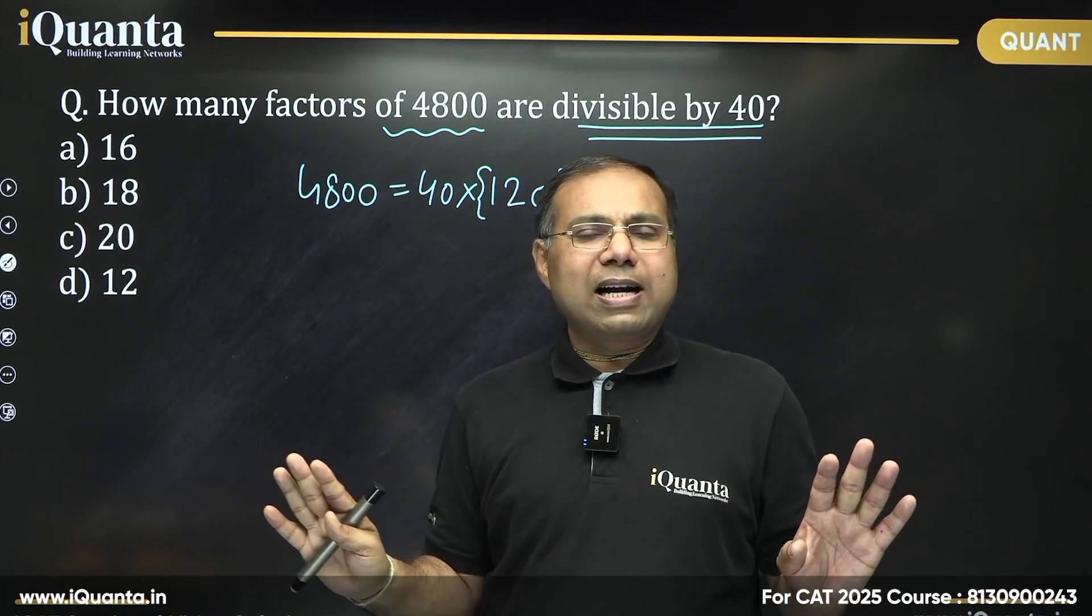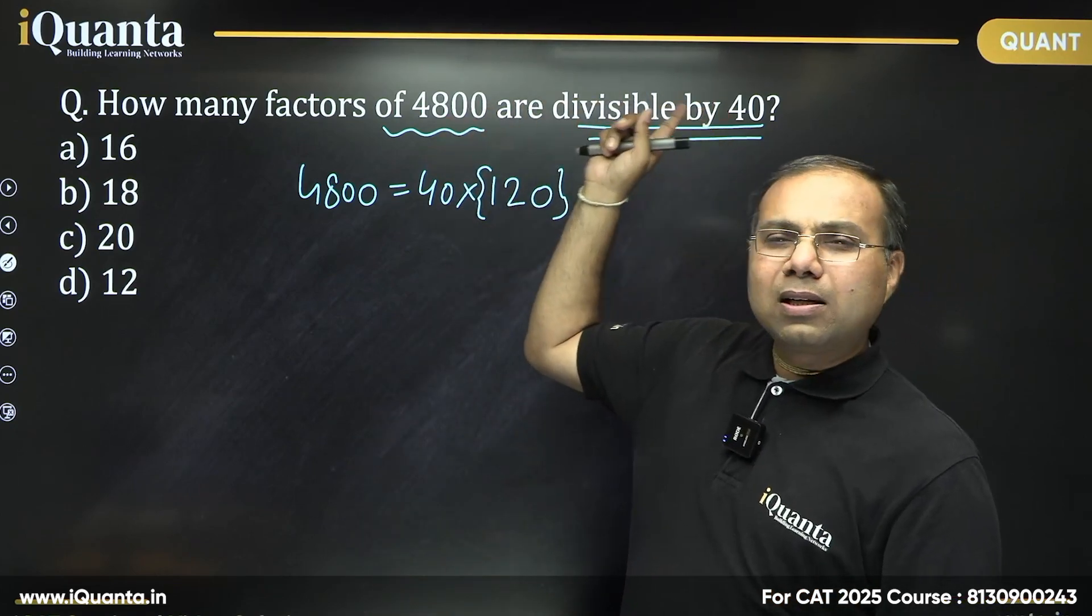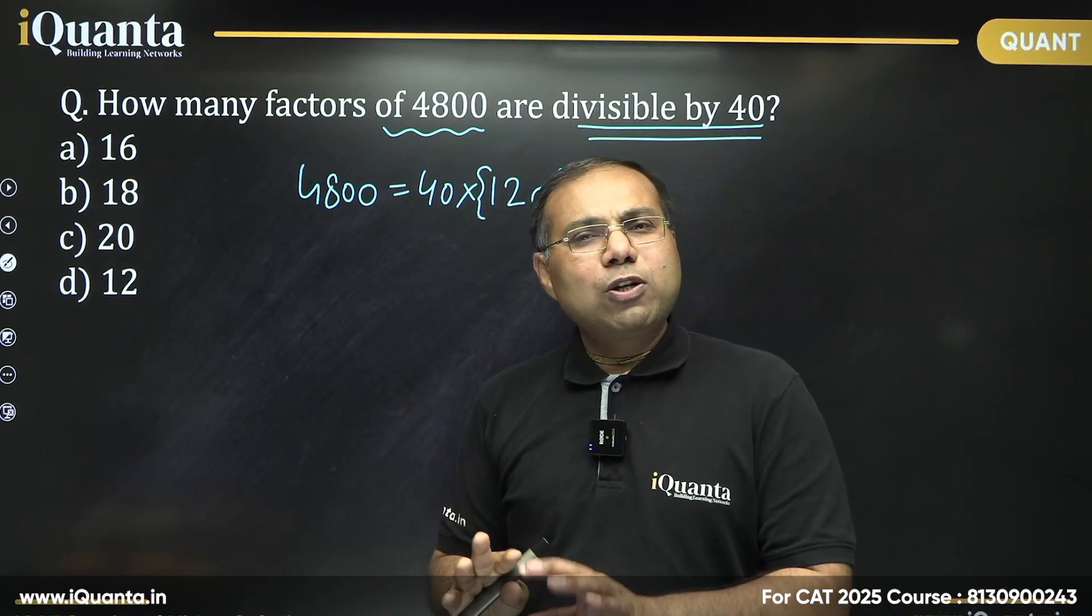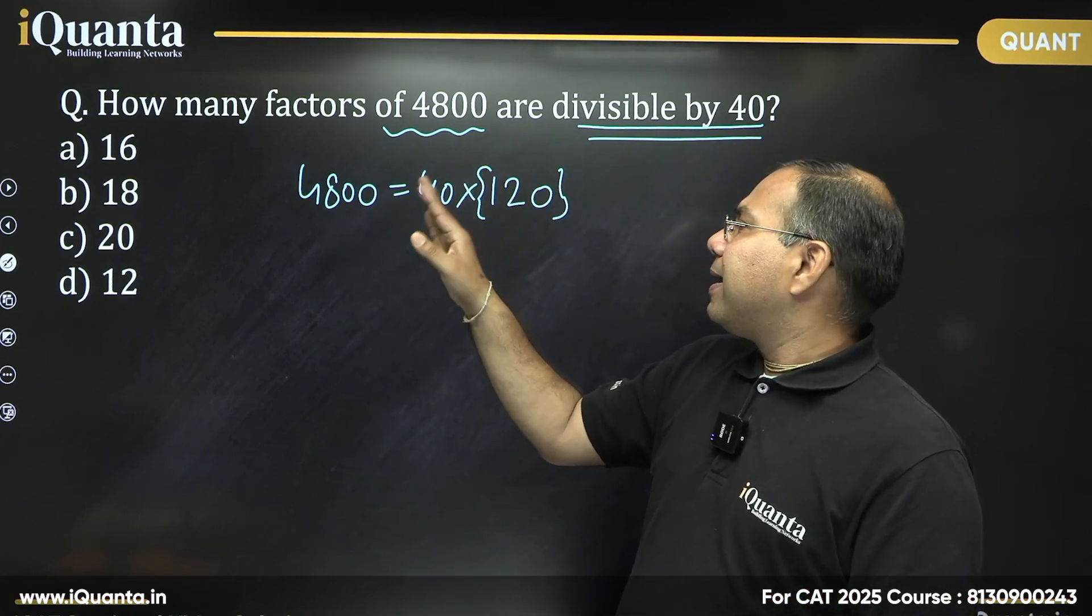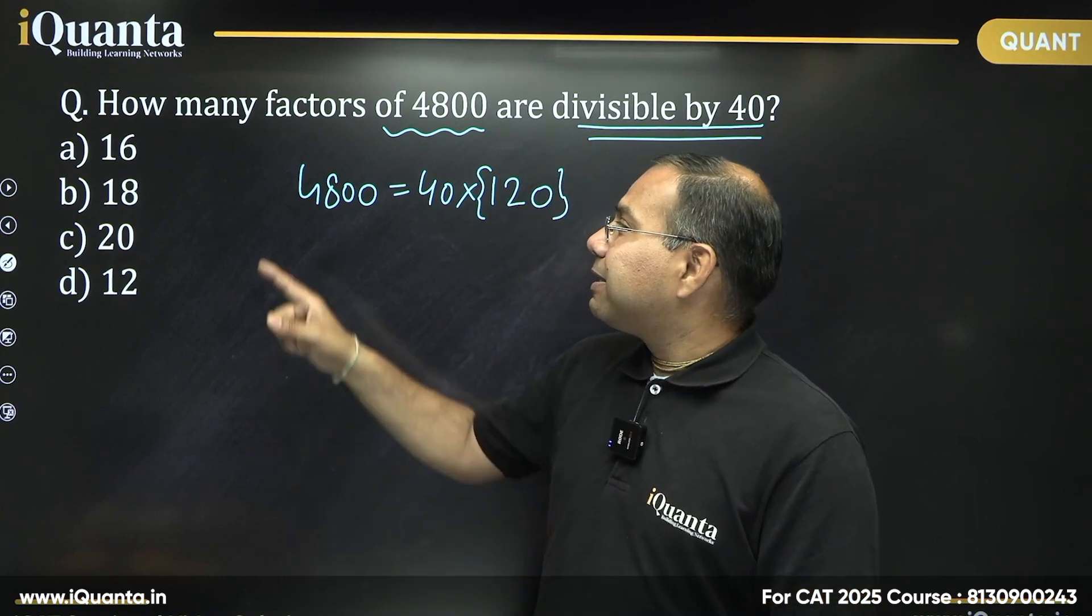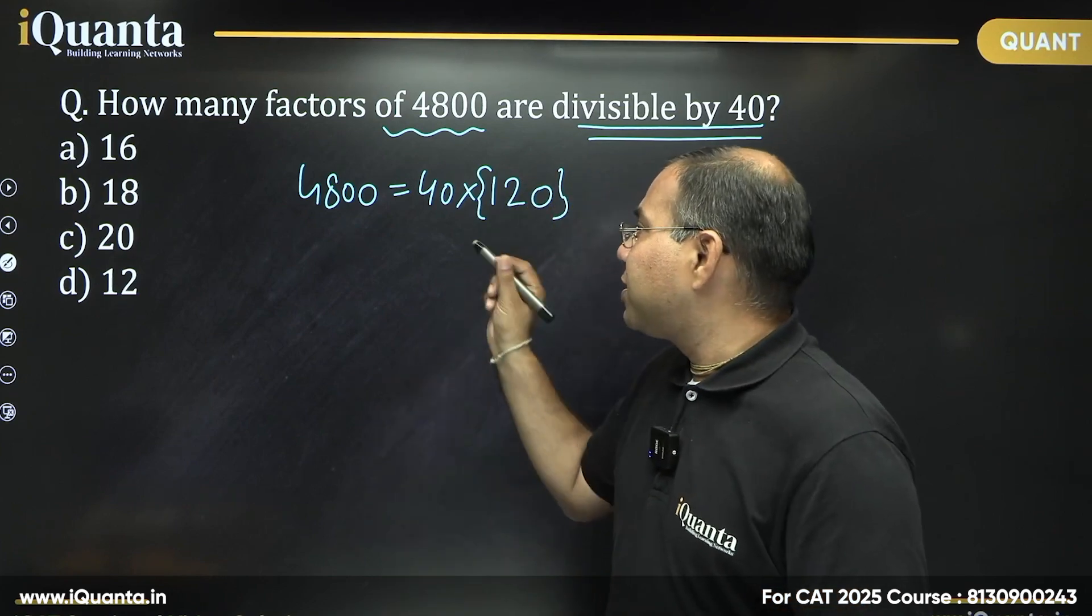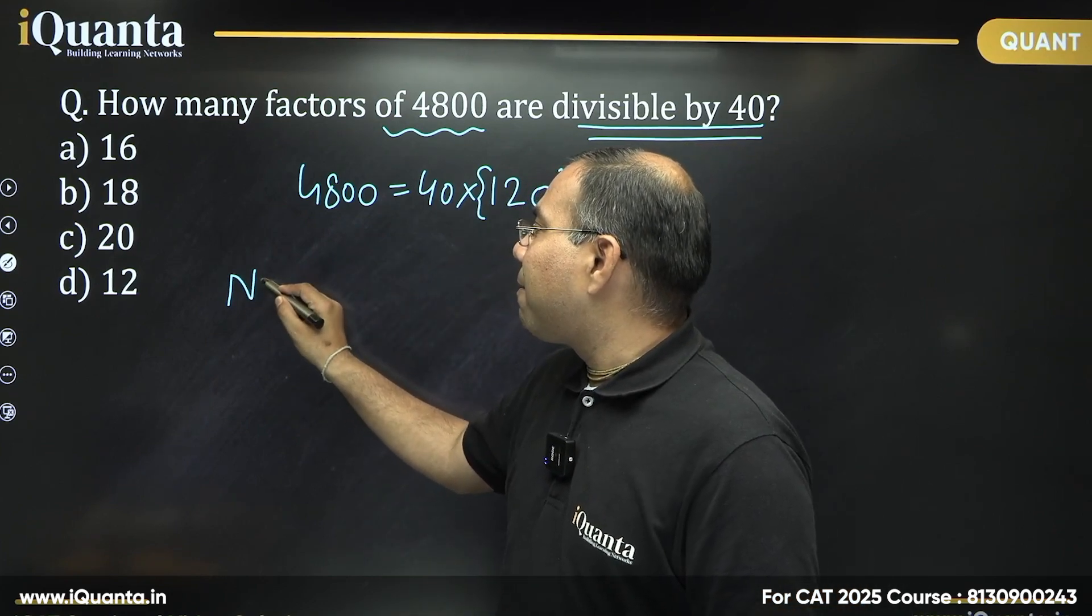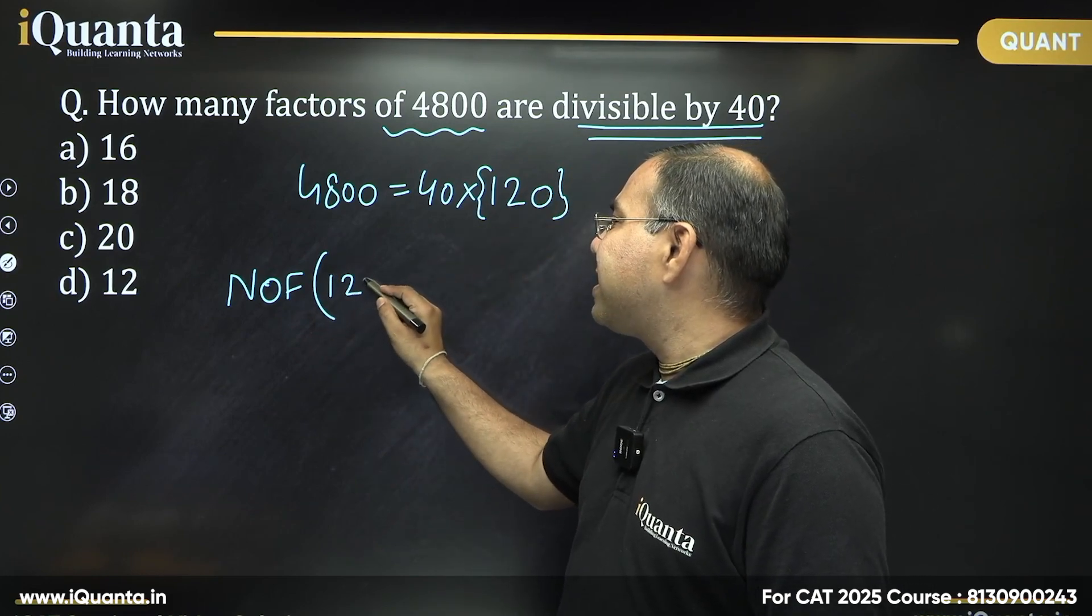Simplest way, right? The simplest way always is that. So whenever you find certain condition like that, what we need to do? We need to take that number out, take that number common and for the remaining number, we just need to calculate the number of factors. So in other words, I can say that this question is nothing but if I rewrite this question, the question is asking about what is the number of factors of this number 120? That is it.